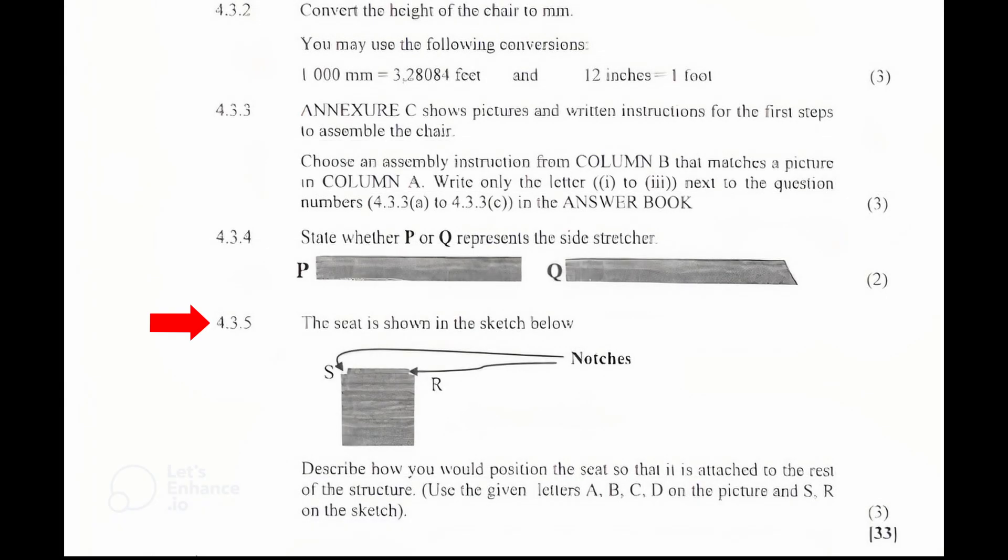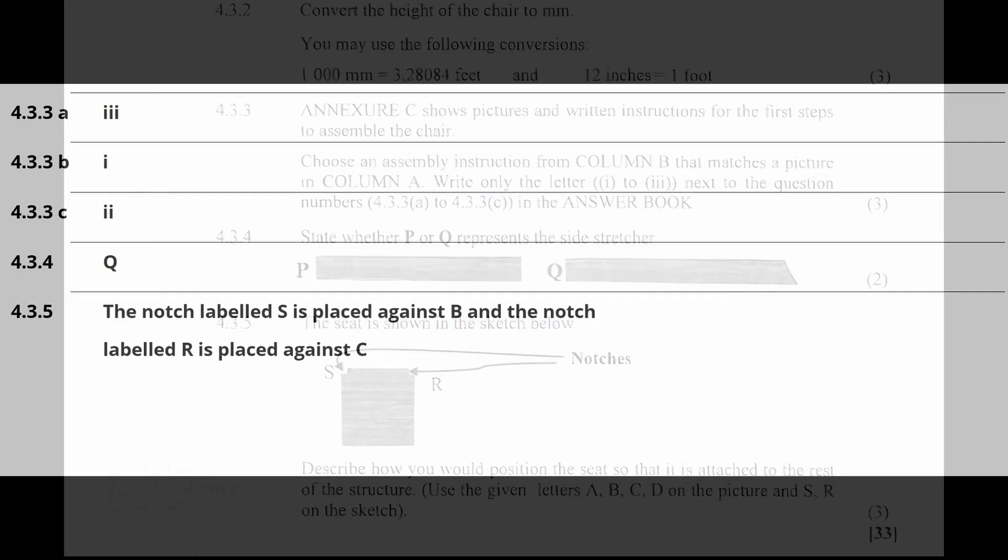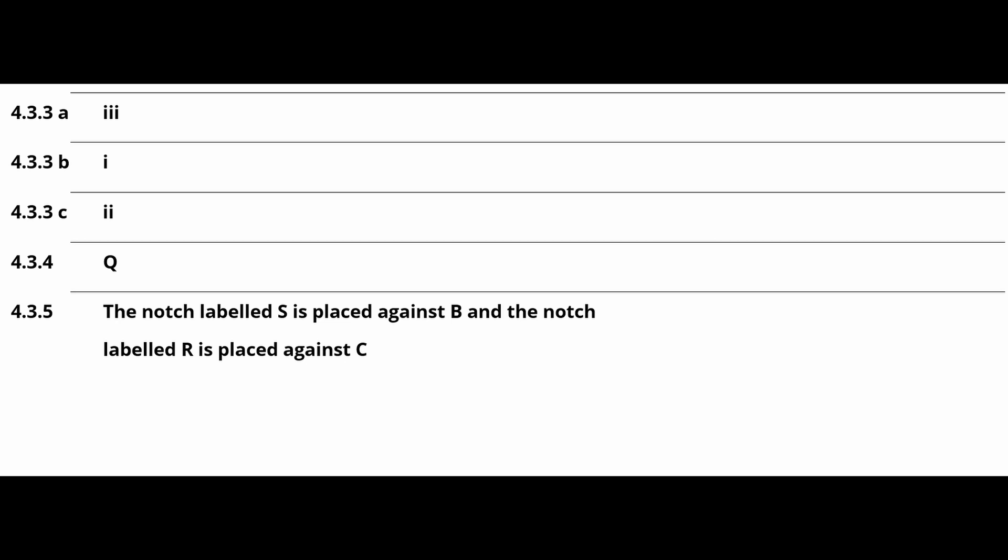4.3.5 The seat is shown in the sketch below. Describe how you would position the seat so that it is attached to the rest of the structure. Use the given letters A, B, C, D on the picture and S, R on the sketch. The notch labeled S is placed against B and the notch labeled R is placed against C.